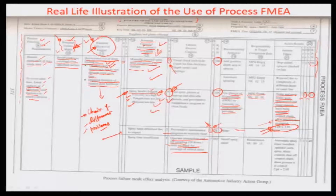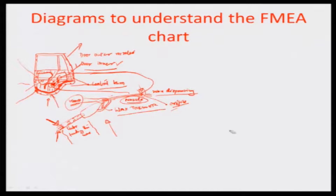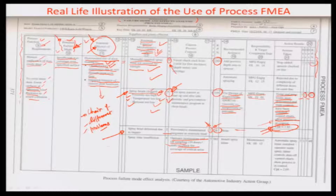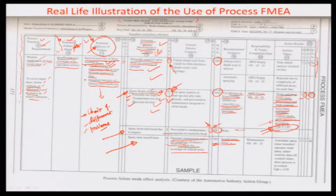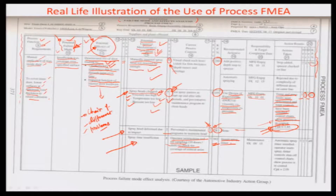The spray head deformed problem is left aside due to its already low RPN of 28. The more critical issue is spray time insufficient, which had a very high RPN of 392. To address this, process engineers suggested installing a spray timer so that unless the complete time cycle of wax spraying has elapsed, there is no way the dispensing can stop.